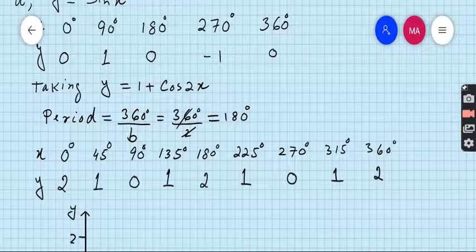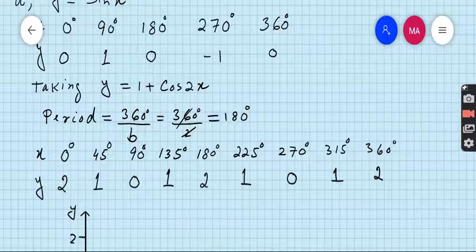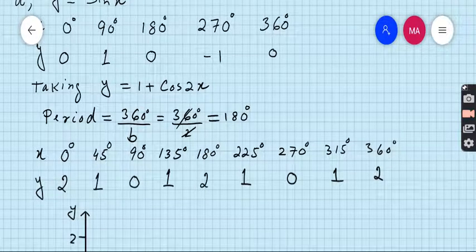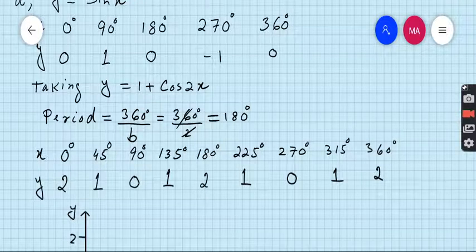You must take 45-degree intervals. If you take 90-degree intervals you will have too few values and they may be irregular. For the table, the x-values are: 0, 45, 90, 135, 180, 225, 270, 315, 360.